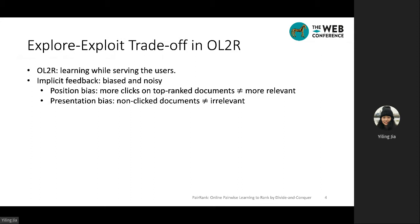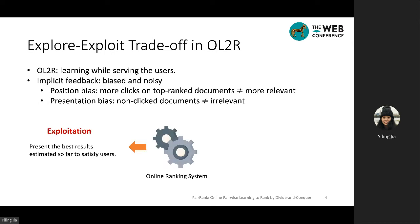The implicit feedback obtained from the interactions is known to be biased and noisy. Therefore, the ranking system needs to balance the need of exploitation by presenting the best results estimated so far to satisfy users, and the need of exploration by presenting currently underestimated results to best improve the ranker.